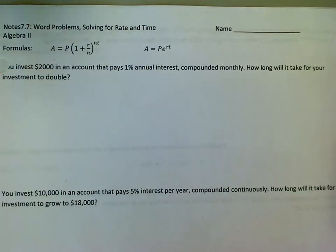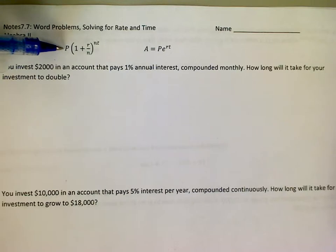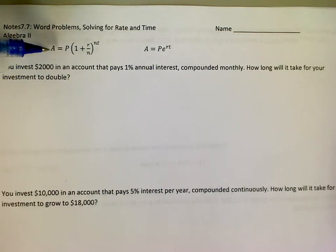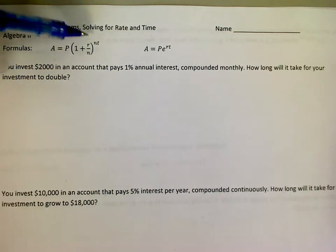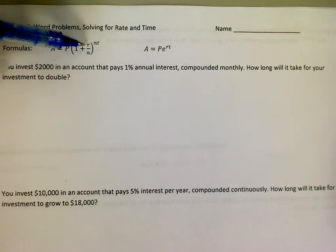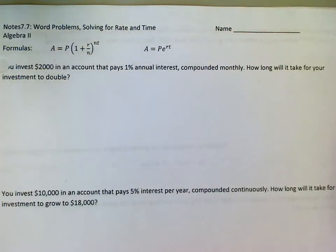Hi everybody. We're working on some exponential and logarithmic word problems involving bank accounts. This time, instead of giving you everything on the right-hand side of the equation and asking you to find the final amount, we're going to work backwards and solve for either time or the interest rate. Buckle up because these problems are definitely tougher than the ones we were doing in the first round of word problems a few days ago.